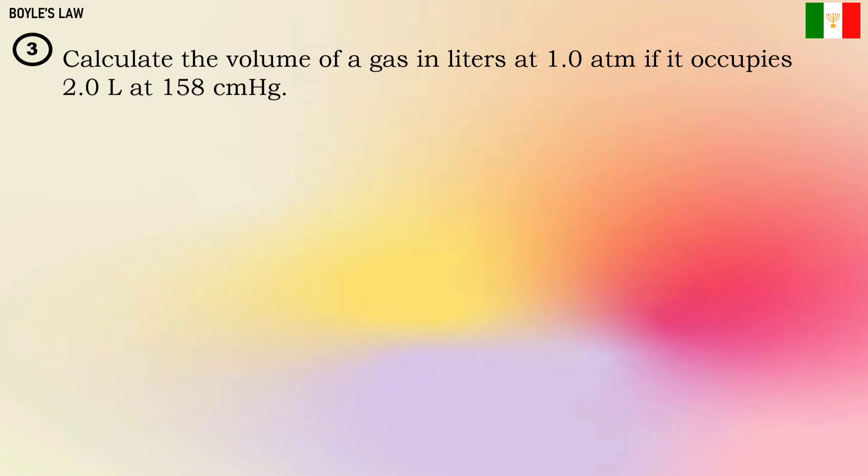Calculate the volume of a gas in liters at 1.0 atmosphere if it occupies 2.0 liter at 158 centimeter of mercury. What we'll do now is write our given. If you notice, the pressure units are different. We know that we can't solve it when the units are different. So we can convert atmosphere into centimeter of mercury to match P₂, or we can convert centimeter of mercury into atmosphere to match P₁. Let's proceed to the conversion.